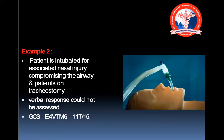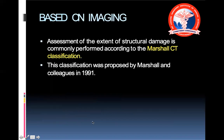This is another example of an intubated patient with an associated nasal injury. The patient has normal eye opening and a normal motor response, but because of the intubation it is recorded as VT, and the GCS is written as 11T over 15.